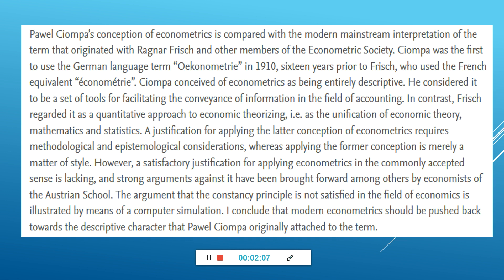Let's look at the first person who named this subject. He was a Polish-Russian scientist. His name was Pavel Siompa. Siompa's conception of econometrics is compared with the modern mainstream interpretation of the term that originated with Ragnar Frisch. Siompa was the first to use a German-language term, Oikenometrie, in 1910 — 16 years prior to Frisch, who used the French equivalent Econometrie.